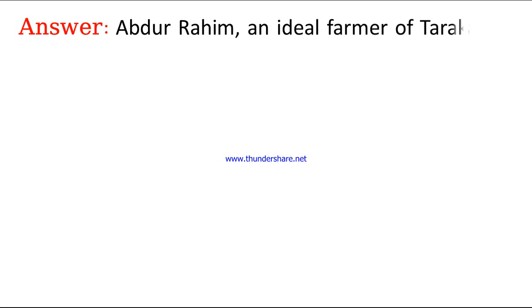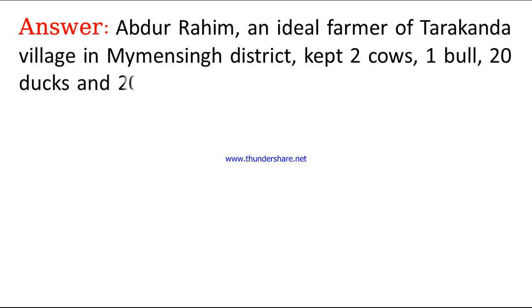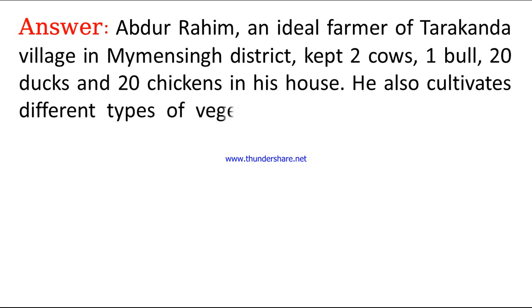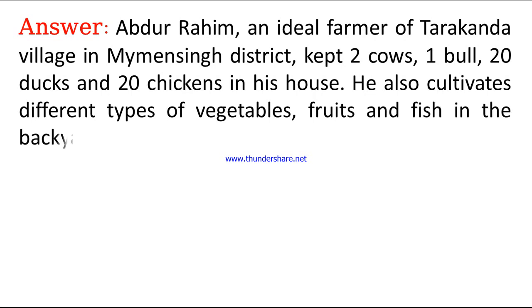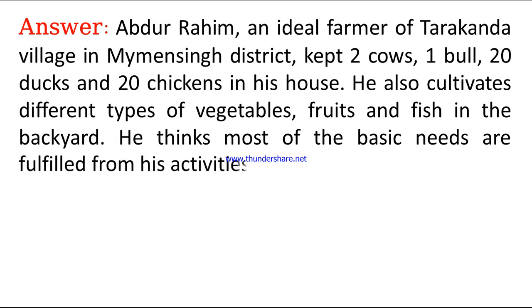Answer: Abdul Rahim, an ideal farmer of Tarakanda village in Maimanshin district, kept two cows, one bull, twenty ducks, and twenty chickens in his house. He also cultivates different types of vegetables, fruits, and fish in the backyard. He thinks most of the basic needs are fulfilled from his activities.